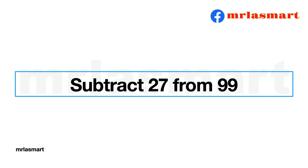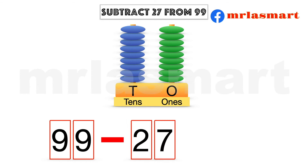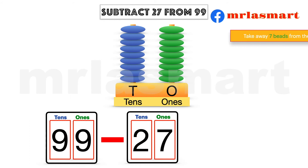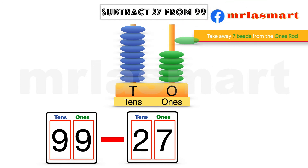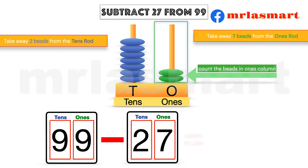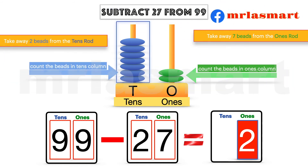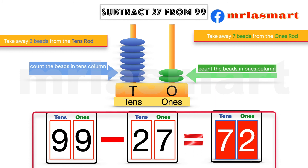Subtract 27 from 99. Take away seven beads from the ones rod. Take away two beads from the tens rod. Count the beads in the ones column. Count the beads in the tens column.